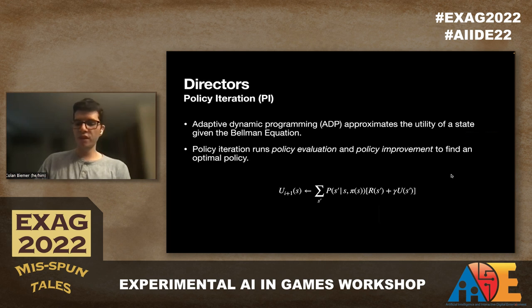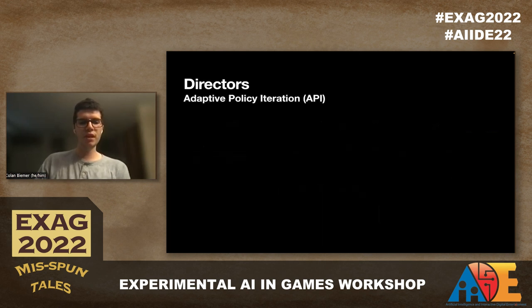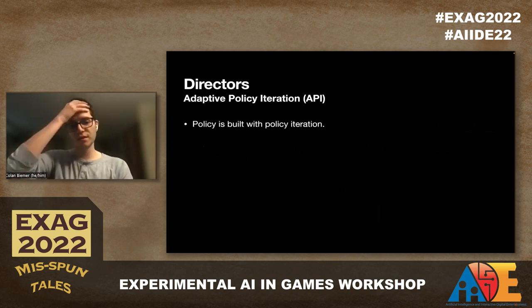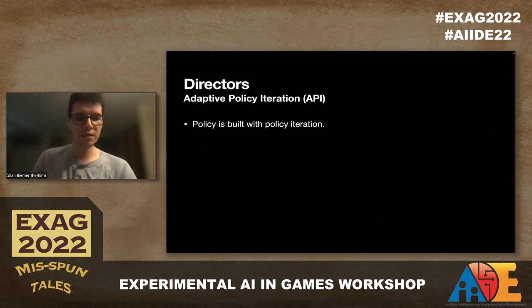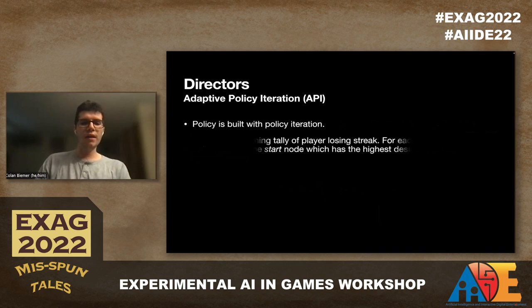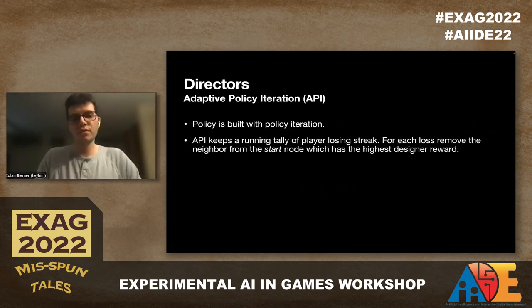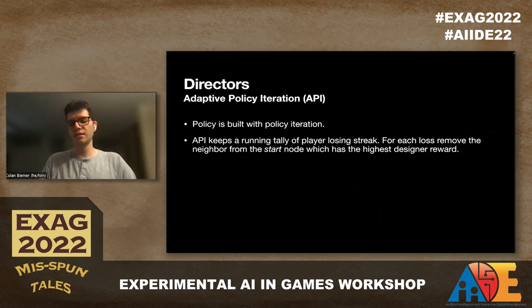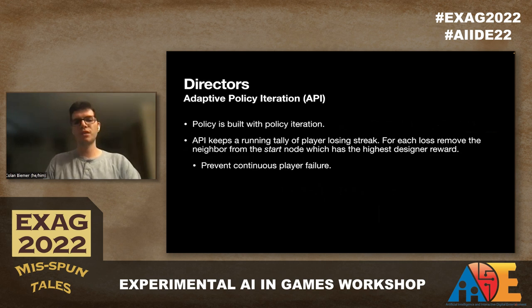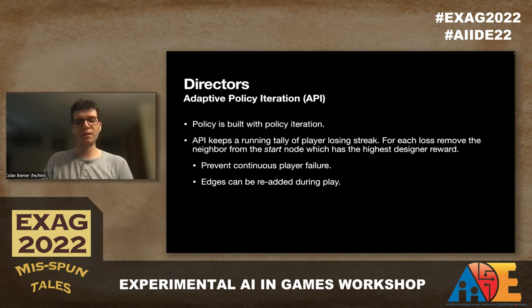When we ran policy iteration, we found a few problems, so we created adaptive policy iteration (API). API runs the same policy evaluation and improvement steps, but adds one extra step: we keep a running tally of the player's losing streak. For each loss, we remove a neighbor from the start node that has the highest designer reward, to prevent continuous player failure. Edges can be re-added during play if the player goes back and eventually beats the corresponding segment.